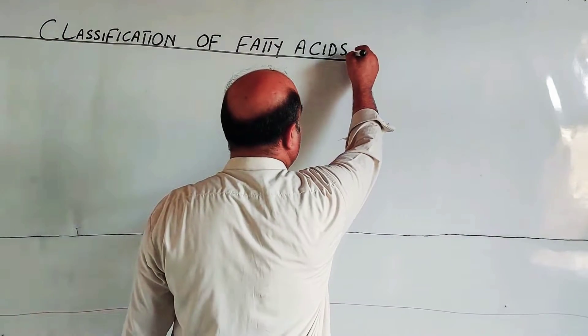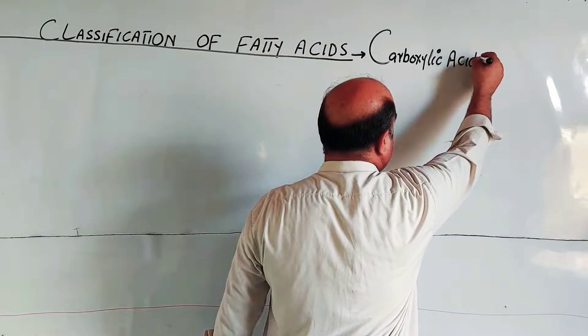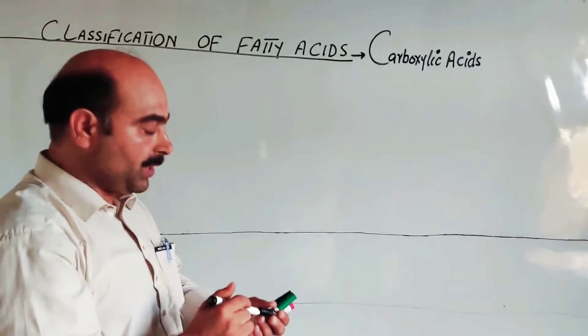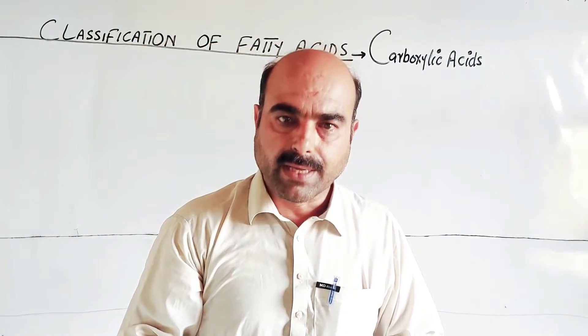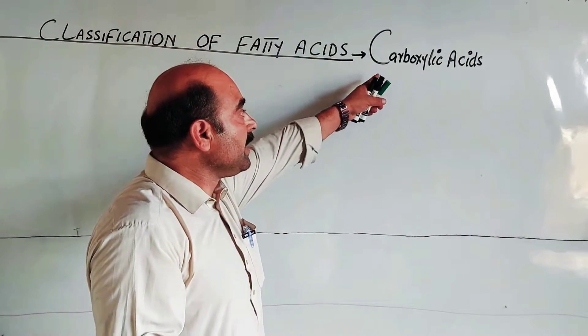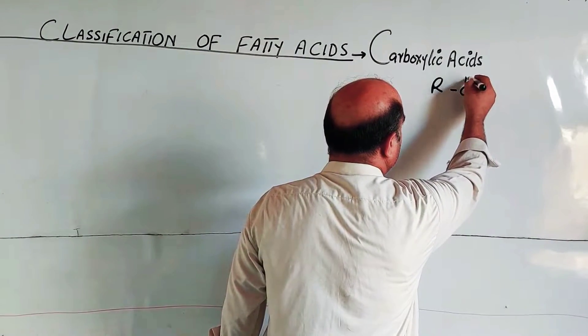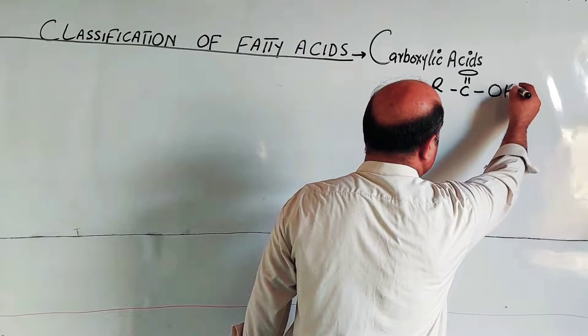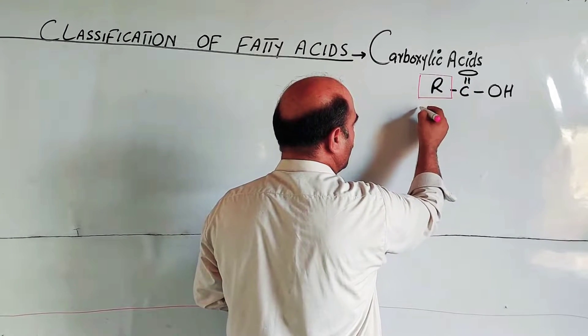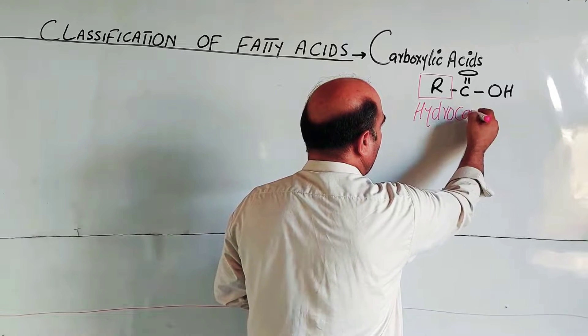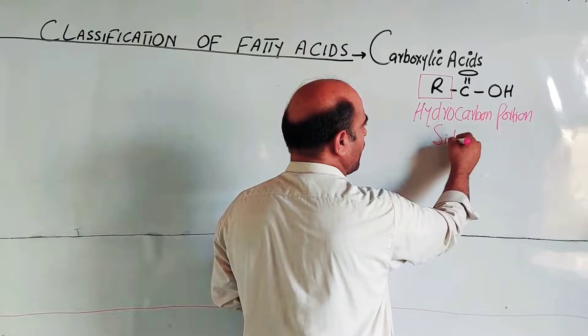The classification of fatty acids. First of all, we should know about the fatty acid. Fatty acids are carboxylic acids. Carboxylic acids are obtained from the hydrolysis or breakdown of fats. Generally, the carboxylic acid general formula is R-C double bond O-O-H. This general formula, the R, represents a side chain representing hydrocarbon portion.